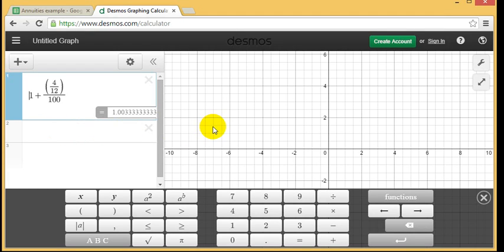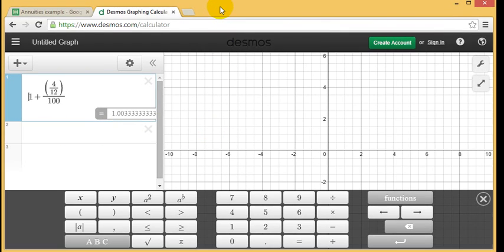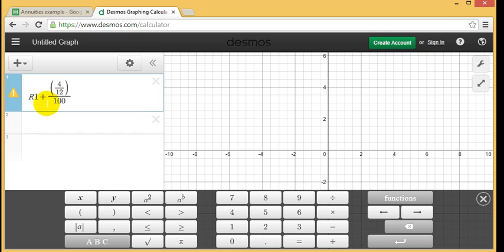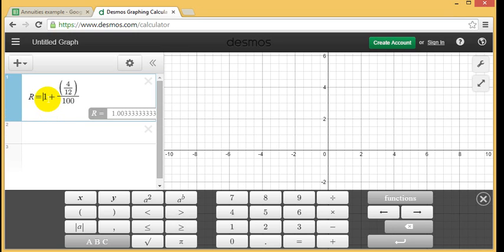Now back to Desmos, which is the calculator that I'm using, you can see there's a very useful function is that I can store one of my answers into a variable. So instead of typing in 1.00333 again in my second calculation, in my first calculation, if I type in R equals at the beginning of that, then it stores the number 1.003 recurring into the variable R.